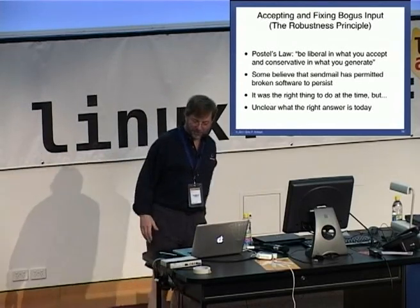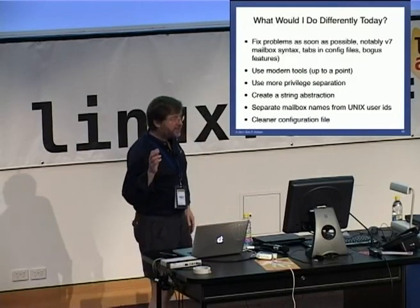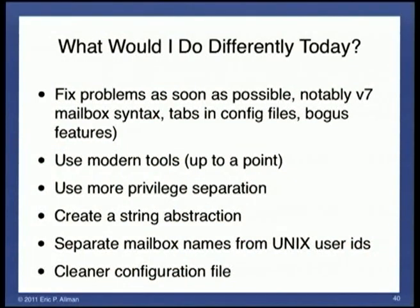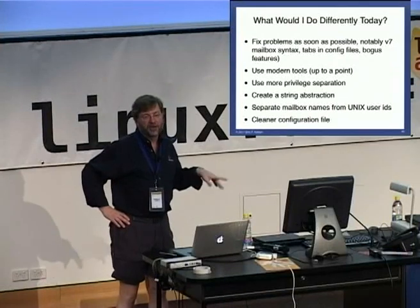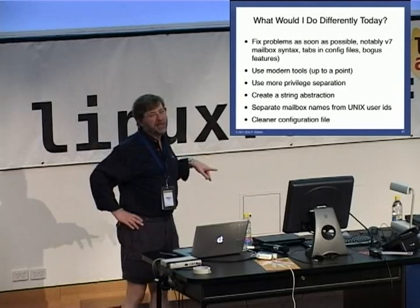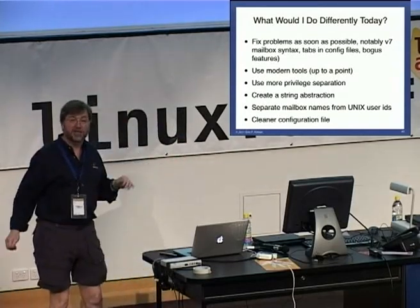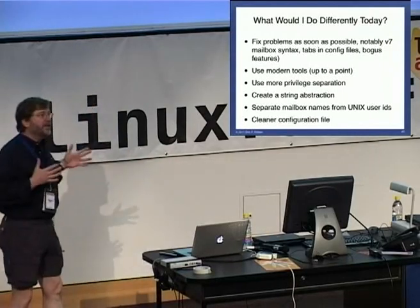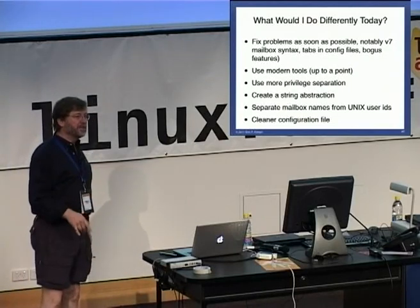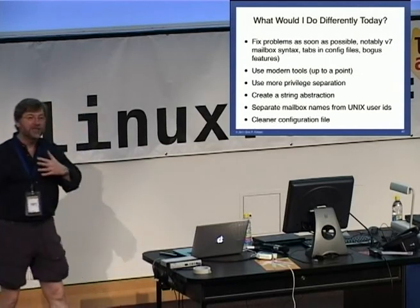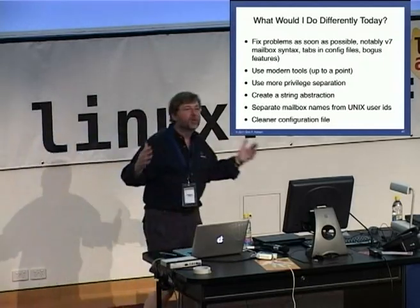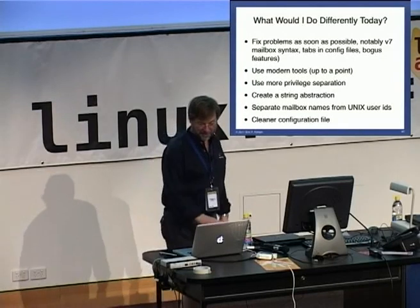So, what would I do differently today? The first thing is I would fix problems as soon as possible. One of them was the tabs, the bogus features I've mentioned. Another one was the v7 mailbox format — I didn't want to change the format of var/spool/mail. I used the exact same thing that came from Bell Labs. That means a line beginning FROM-space separates messages. People say it's the Berkeley format — it's not the Berkeley format, it's the v7 format. I am so sick and tired of seeing greater-than-FROM in the middle of text documents that have obviously gotten mailed around at some point. I could have fixed this. I'm sorry. I didn't know I could have fixed it.